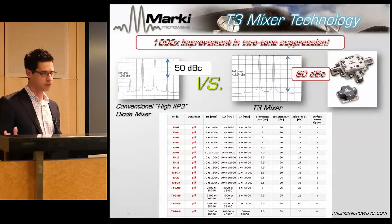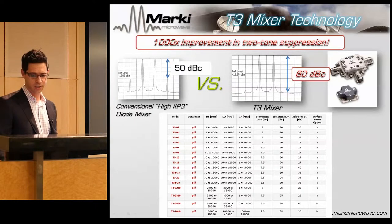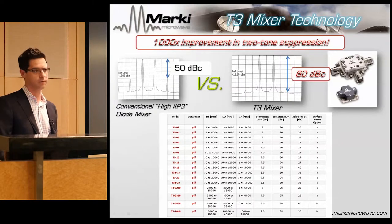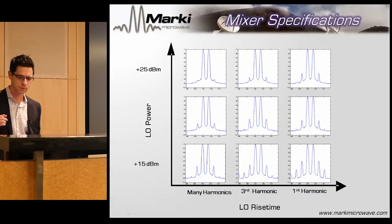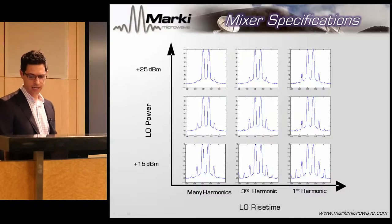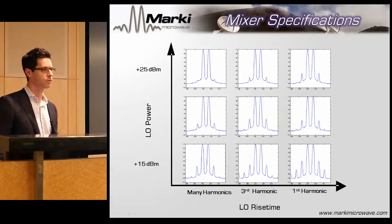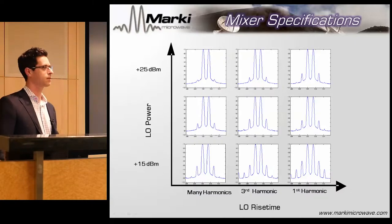The T3 has comprehensive coverage all the way through 40 gigahertz. We can take a high IP3 diode mixer — like a double-balanced mixer with a very high-level diode offering 25 dBm input intercept — and turn that into 40 dBm in a T3. Driving the T3 with 15 dBm is towards the bottom end of the range, but as we increase that by 10 dB and increase the harmonics injected into the mixer, we can dramatically improve the IP3.